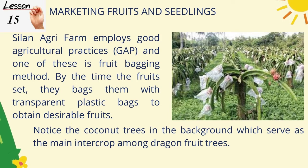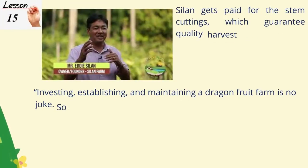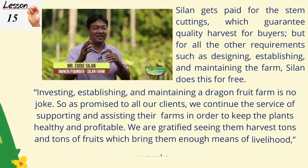By the time the fruit sets, they bag them with transparent plastic bags to obtain desirable fruits. Notice the coconut trees in the background which serve as the main intercrop among dragon fruit trees. Celon gets paid for the stem cuttings which guarantee quality harvest for buyers, but for all other requirements such as designing, establishing, and maintaining the farm, Celon does this for free. Investing in establishing and maintaining a dragon fruit farm is no joke.